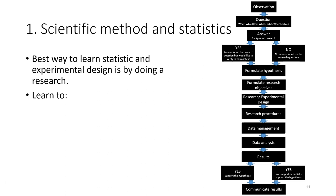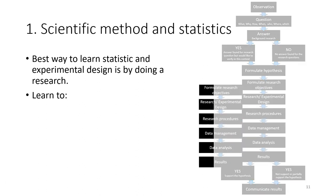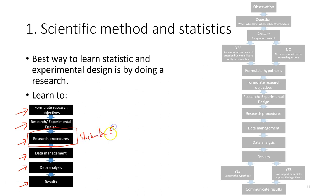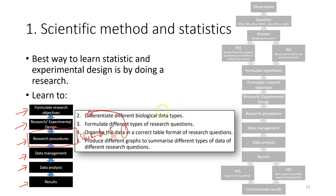The best way to learn statistics and experimental design is by doing research. In this course, we will focus on the parts of the scientific method starting from formulating research questions and objectives, designing experiments, collecting data, data management, data analysis, and interpretation of results. All assignments and research questions should be related to your daily life, and your experimental units should be your classmates. You will learn to differentiate biological data types, organize data, and produce graphs based on your research questions.